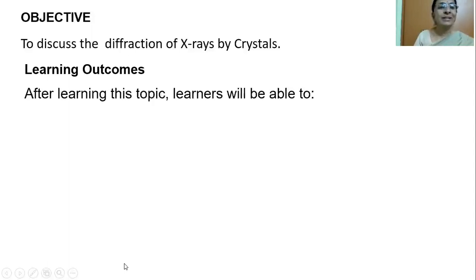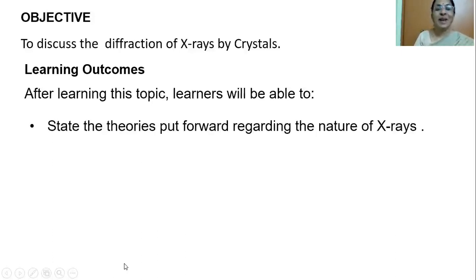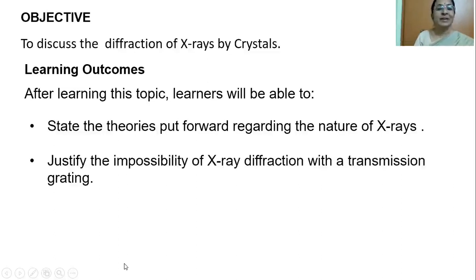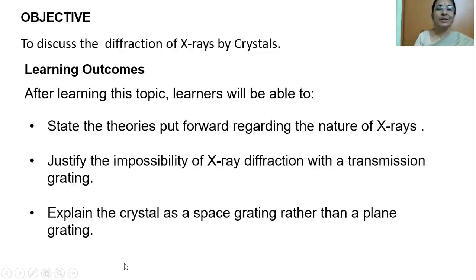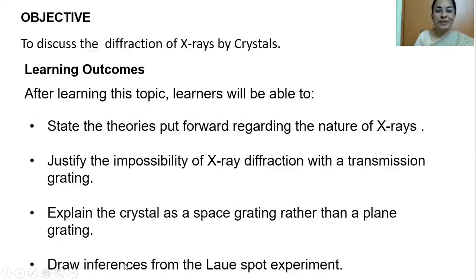The learning outcomes will be that the learners after listening to this short explanation will be able to state the theories put forward in those days regarding the nature of X-rays, justify the impossibility of X-ray diffraction with the transmission grating, explain the crystal as a space grating rather than a plane grating. A plane grating is a two-dimensional object, whereas a crystal can act as a three-dimensional object which could play the same role as the grating. They will be able to draw inferences from the Laue spot experiment.